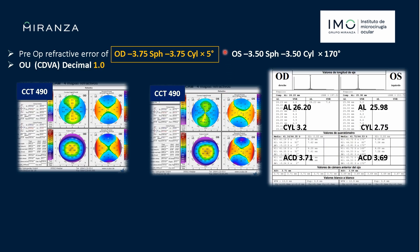To present our patient's data: very good vision, axial lengths greater than 25 mm, corneal cylinders of around 3 diopters, and anterior chamber depth from epithelium of 3.7 mm. Pentacam corneal tomography shows no suspicious elevation. The anterior corneal curvature shows regular and symmetric bow-ties.